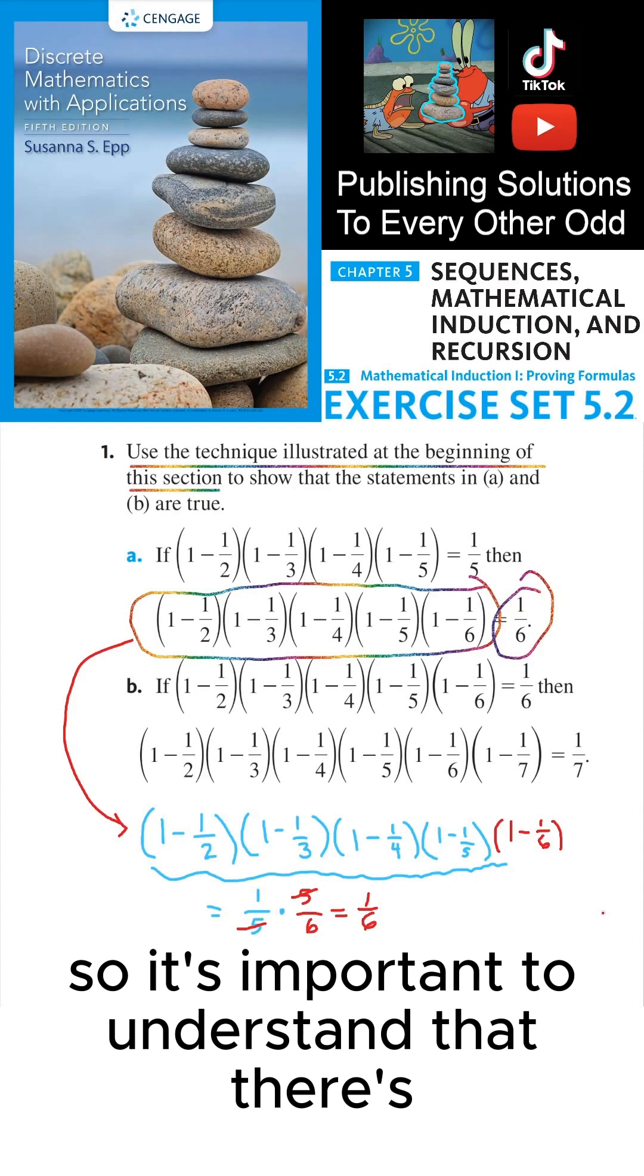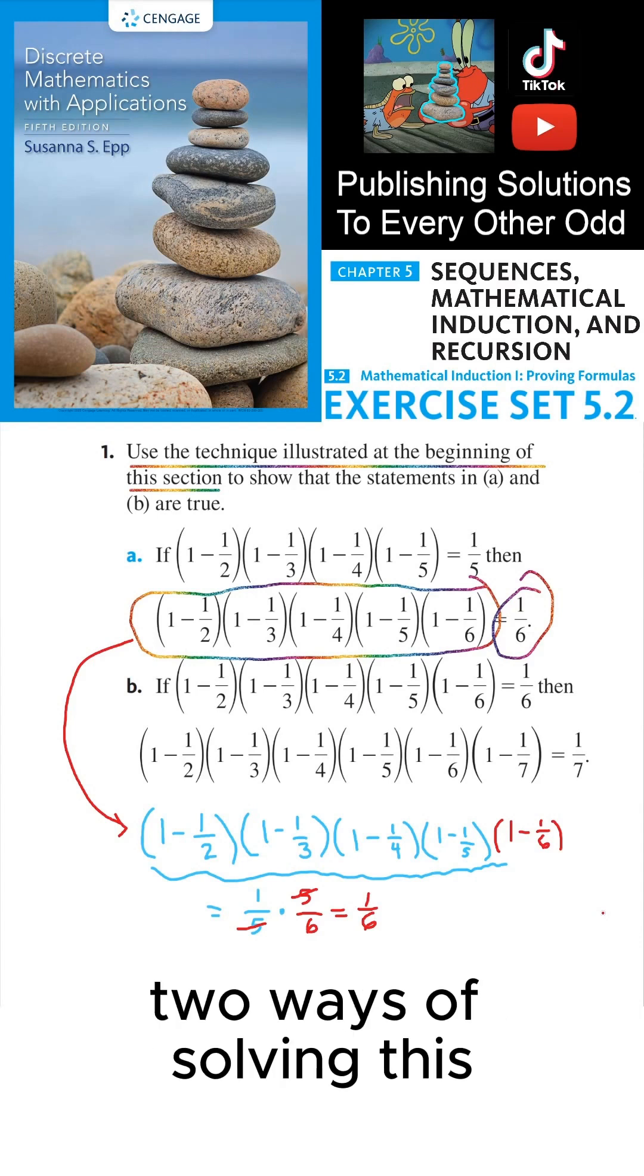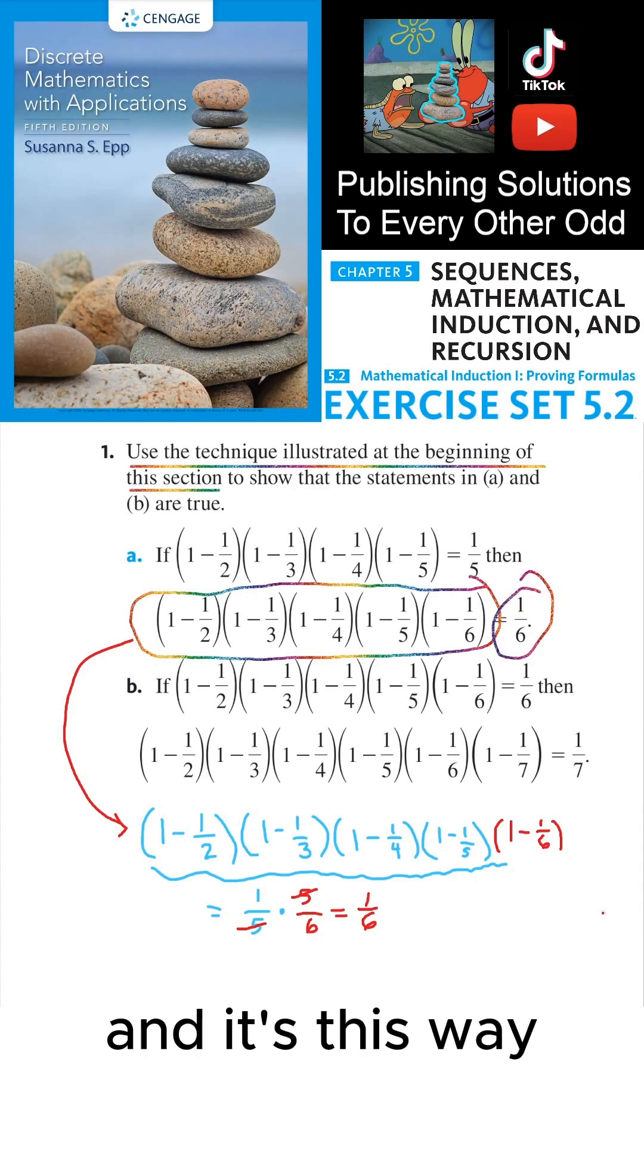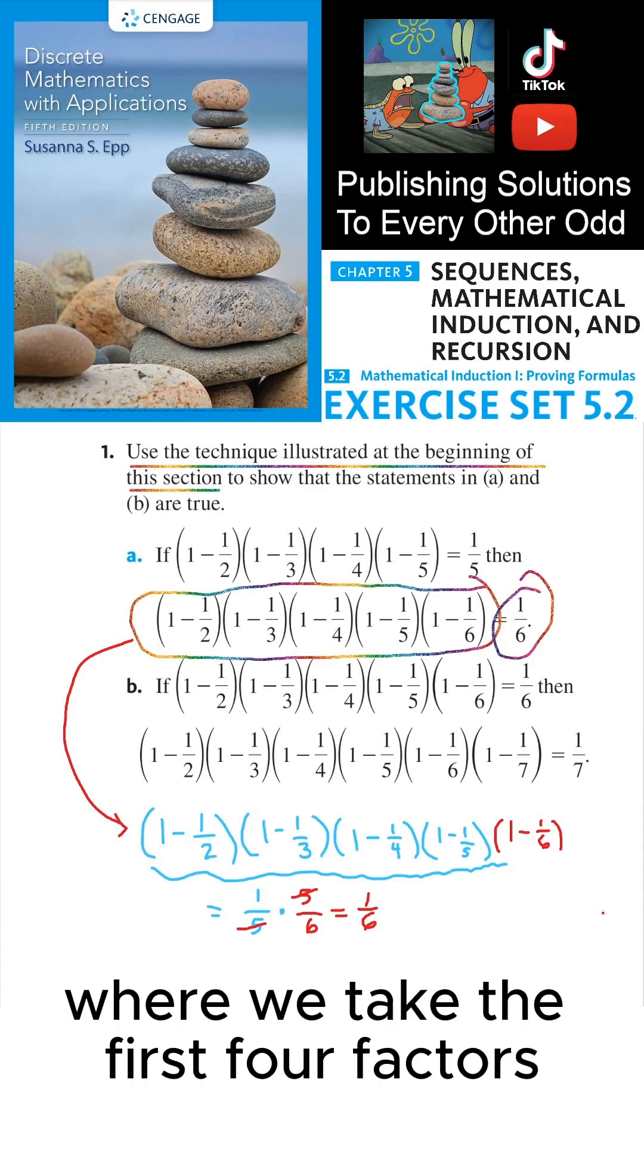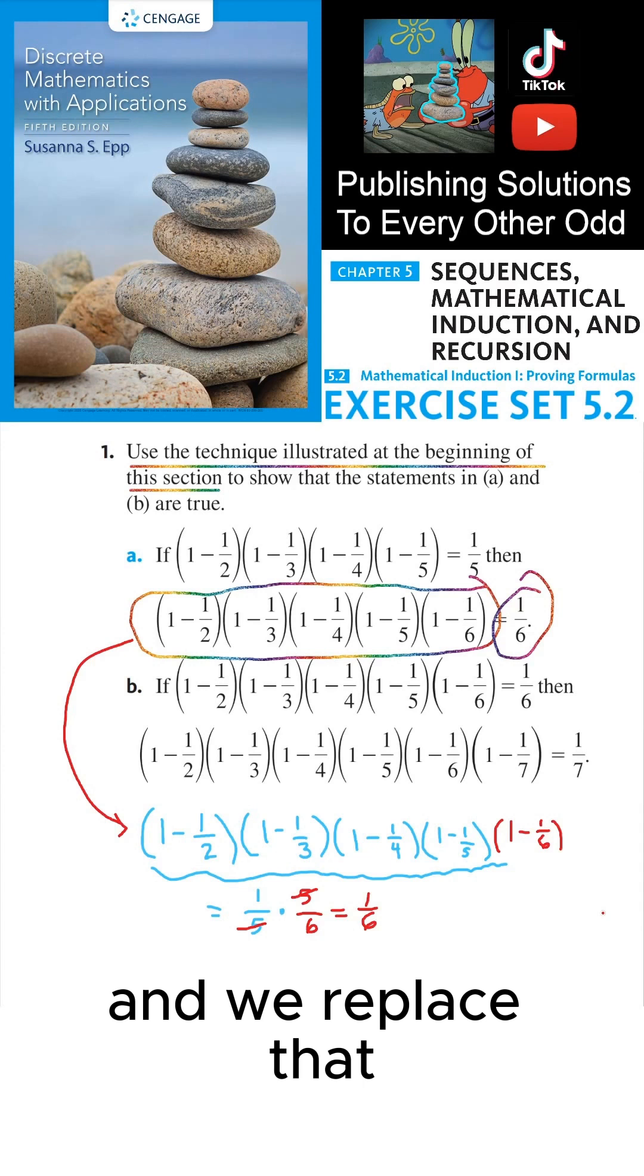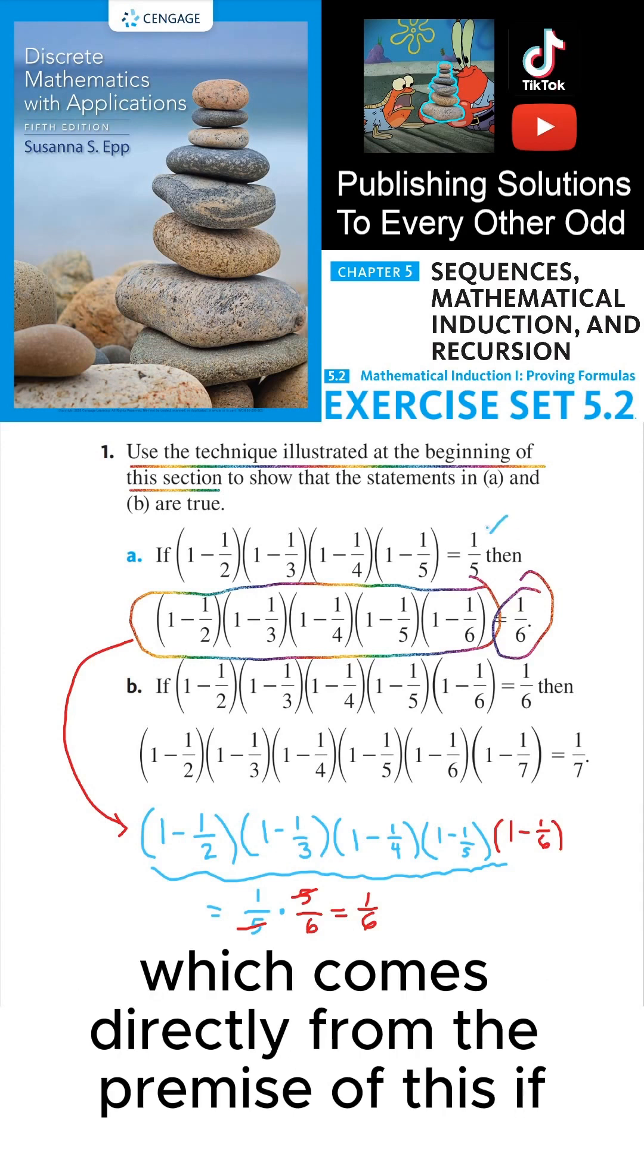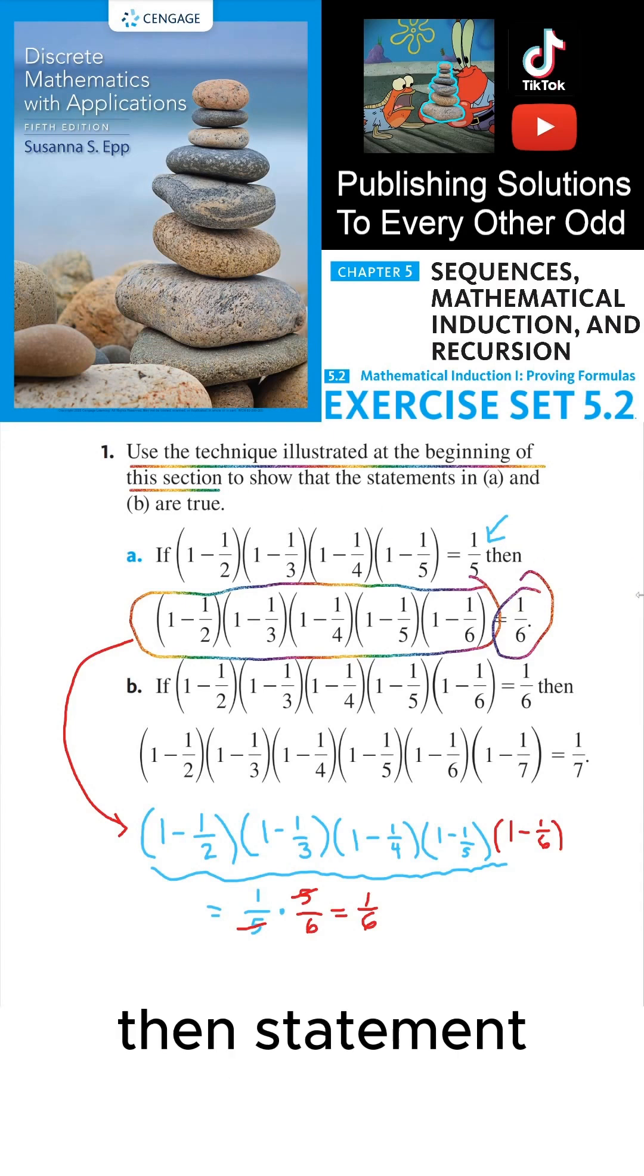So it's important to understand that there's two ways of solving this, but this question is trying to get you to solve it a particular way. And it's this way, where we take the first four factors and we replace that, we substitute that with 1/5, which comes directly from the premise of this if-then statement.